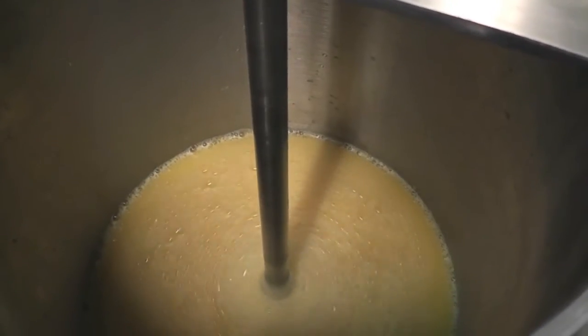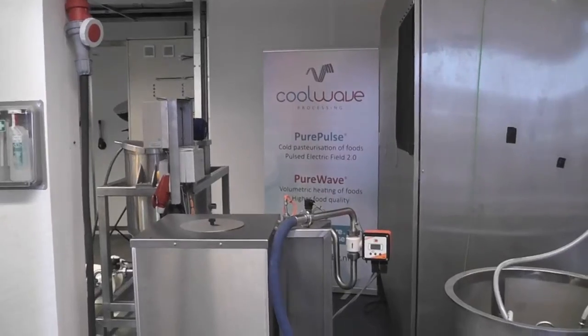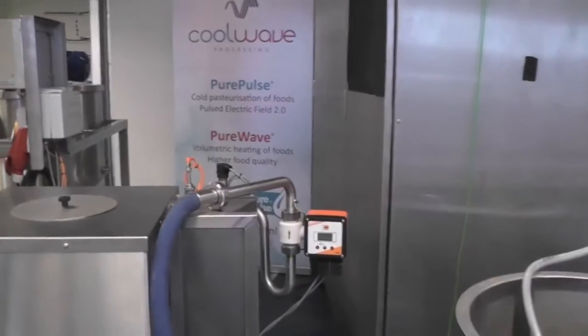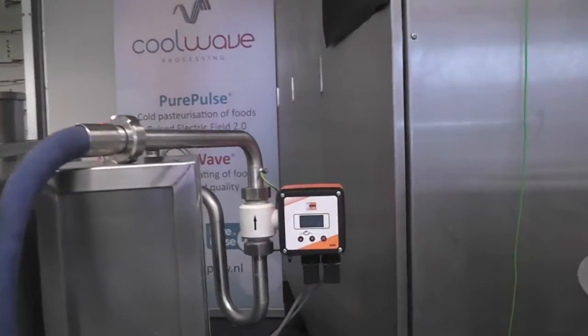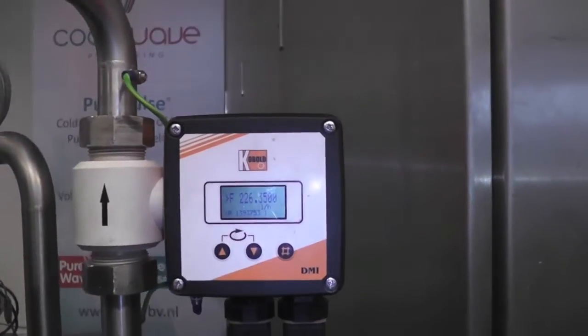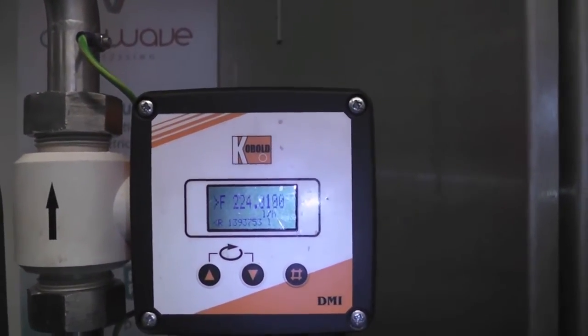The juice mixture is then transported using a hygienic pump to the heat exchanger. At the heat exchanger, in this case an electrical heat exchanger, the mixture is preheated at the required temperature, in most cases between 20 and 30 degrees Celsius maximum.